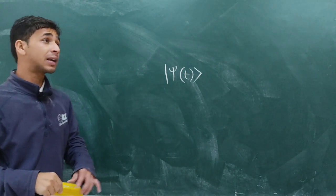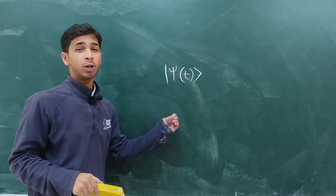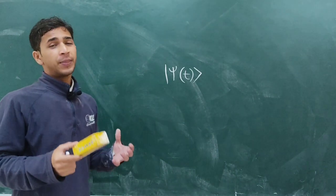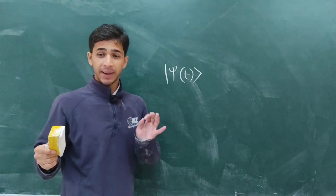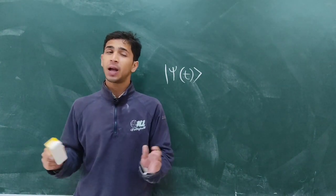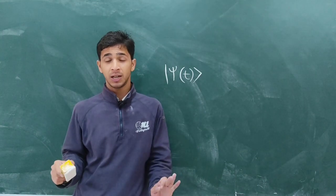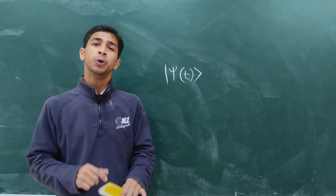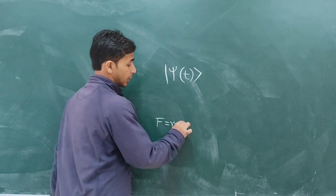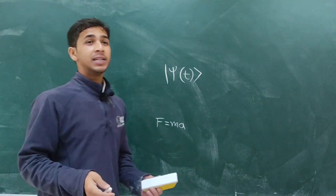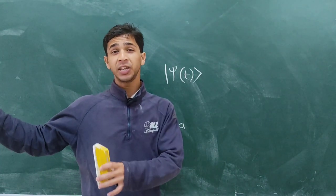And to know about the time development of this state, we have to use the time-dependent Schrödinger equation, which is mainly governing the quantum mechanical world. As in the classical world, we use the equation F equals mA to know about particles' next features, next position, velocity, etc.